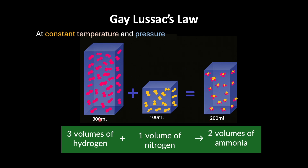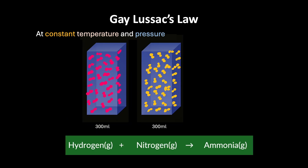The volumes of hydrogen and nitrogen combine in a fixed whole number ratio of 3:1. Now I have the same question: what if, instead of taking 100 ml of nitrogen, we keep the volume of hydrogen as 300 ml but take excess nitrogen — say 300 ml — what do you think will be the volume of ammonia that shall be produced?